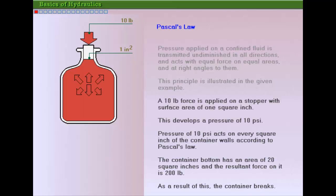A small input force is applied to the stopper. Pressure equal to the force divided by the stopper area is created in the fluid. In this case, it is 10 pounds per square inch of pressure, as we have applied 10 pounds of input force over an area of one square inch.